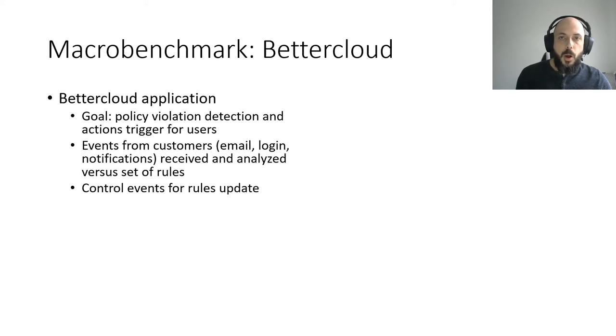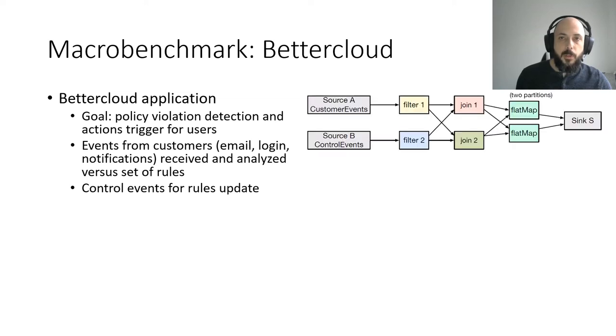We now show the results of our algorithms on a real-world-based example. We have used a graph representing BetterCloud's policy violation detection workflow presented in the introduction. Here, we have 8 different tasks with one having 2 partitions. As for the previous experiment, we provoked the crash of one task, more precisely one of the partitions of the FlatMap task. It is a qualifier task who evaluates the customer events.